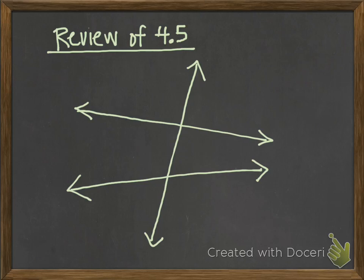When we intersect two or more lines, we get eight or more angles. I'm going to quickly label the angles with numbers so we can refer to them. There were a couple types of angle pairs we talked about. The first was alternate interior angles. Alternate interior angles would be like angles 3 and 6.